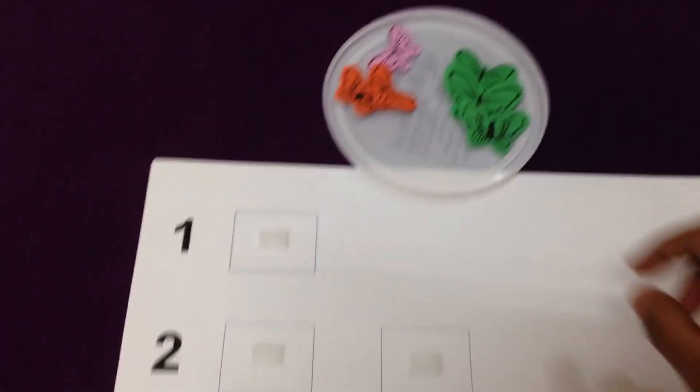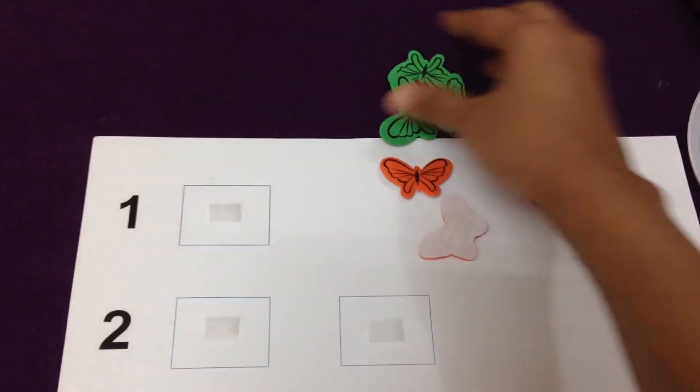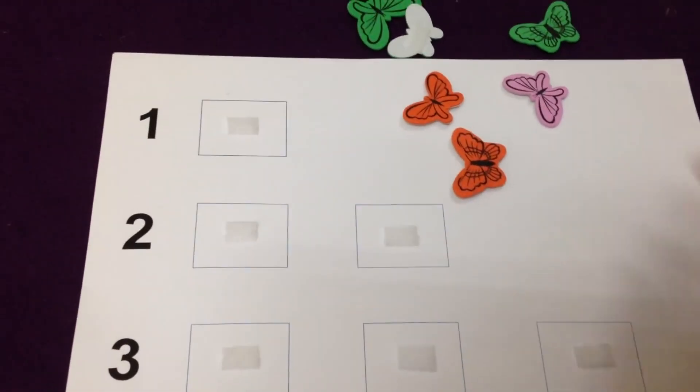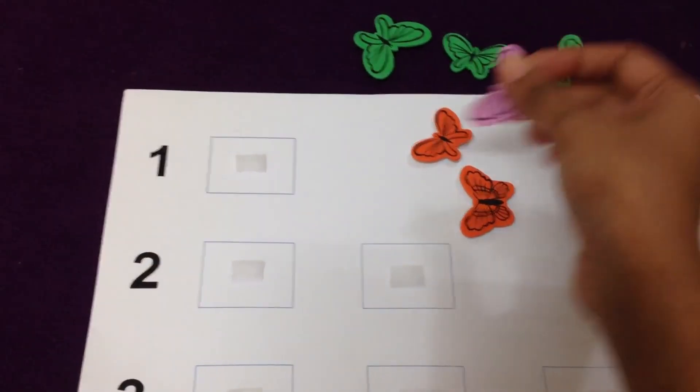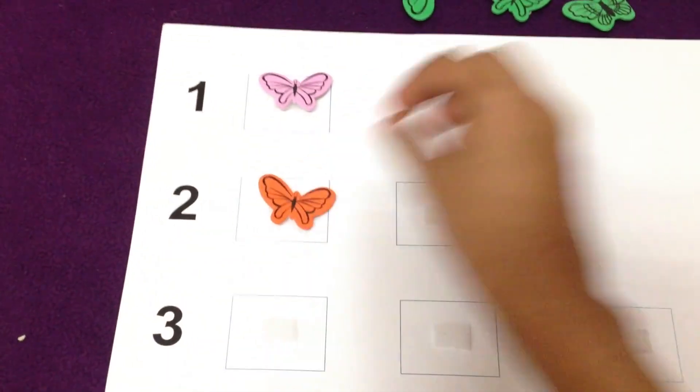I've given him butterflies to put in the counting table, as you can see. You can use anything you want. He just has to put it in the respective categories, so one butterfly, two butterflies, three butterflies.